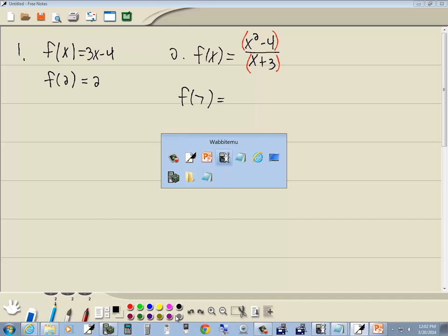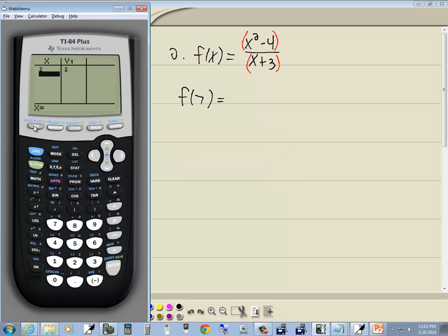So let's go enter this in. So I'm going to go to Y equals, clear, do a beginning parentheses, the x key, x squared, minus 4, closing parentheses, divided by, beginning parentheses, x plus 3, then closing parentheses. So again, parentheses around the top part, parentheses around the bottom part.